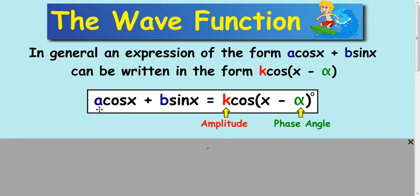So how do we do this? Well, generally, what happens is when you add the two waves, you get k, the amplitude here, we need to work that out. And you get alpha, which is the phase angle.